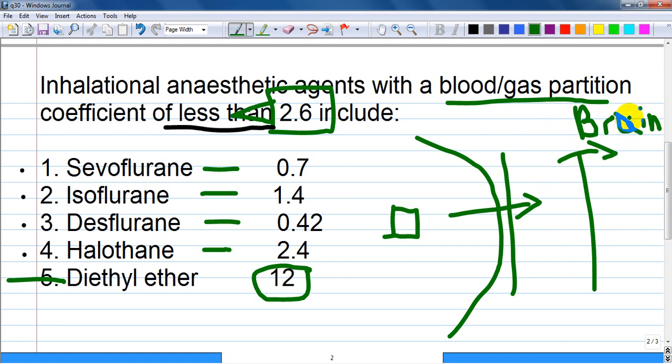After equilibration with the brain and discontinuing supply of anesthetic, blood concentration decreases, and of course anesthetic comes back to the blood, goes to the lungs, and exits.